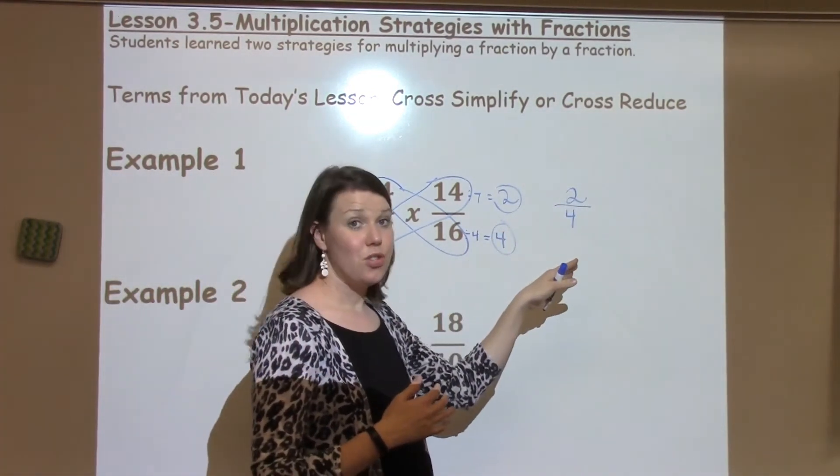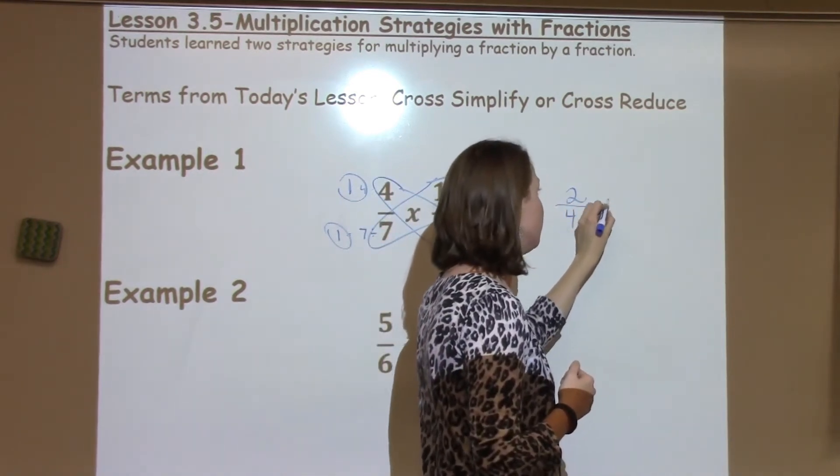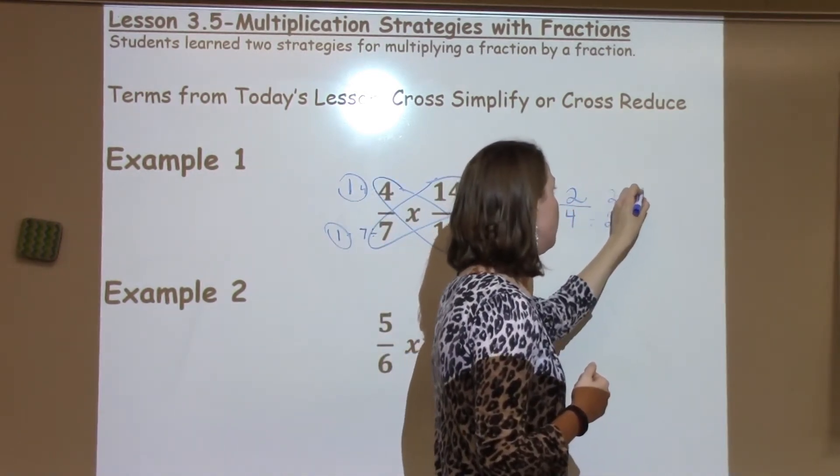Now, I still need to reduce 2 fourths. A lot of 5th graders are going to see those are going to share 2's because they're both even, which gives us 1 half.